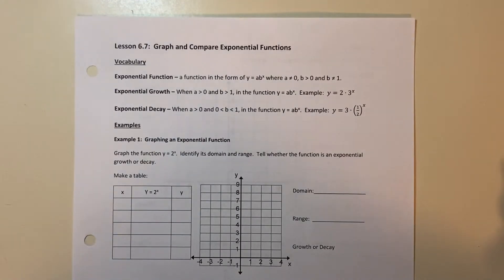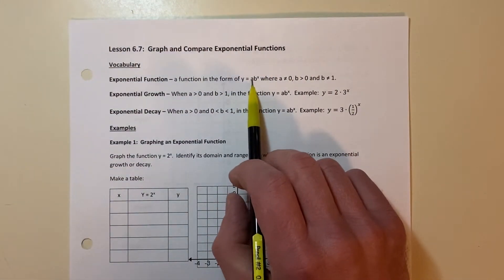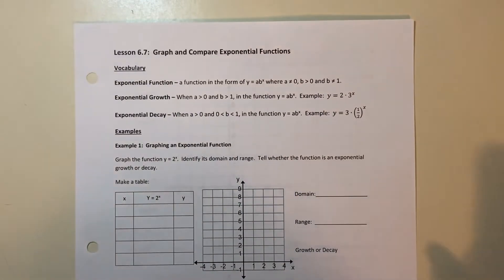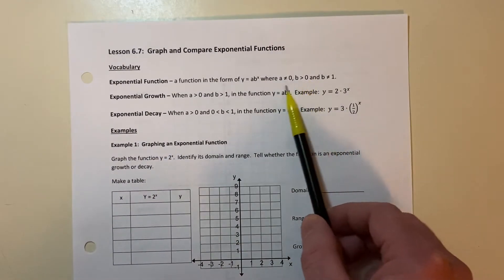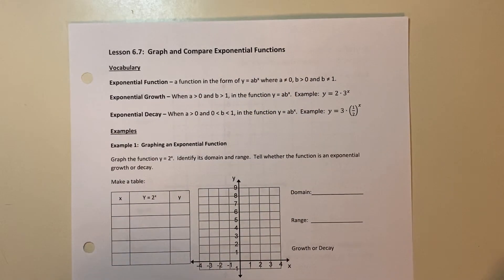Some vocabulary we have: first things first, an exponential function is a function in the form of y equals a times b to the x. Notice your variable is the exponent, which is kind of cool. Now there are some limitations here — basically, if you were any of these things, it would not be an exponential function.